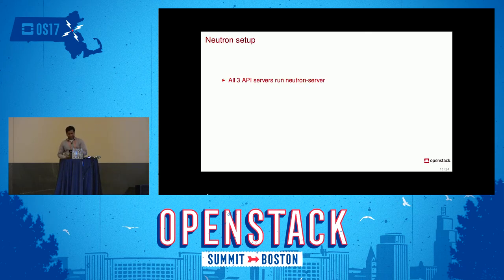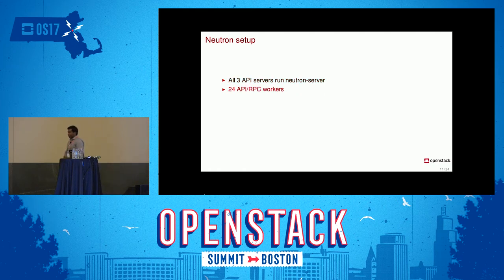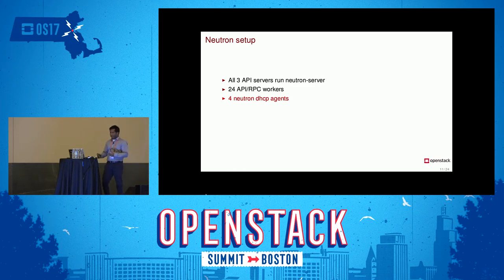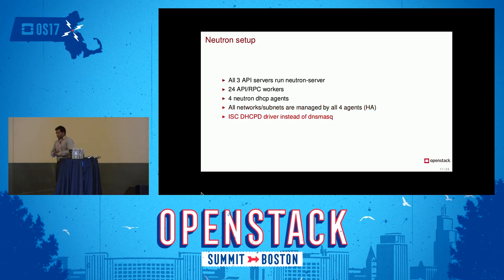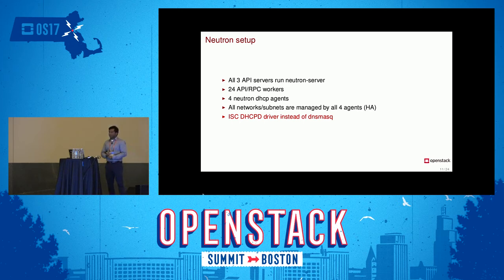Let me give a background about our Neutron setup. We had three API servers all running Neutron API, with 24 API and RPC workers. We have four Neutron DHCP agents that actually serve DHCP. All Neutron subnets and networks are managed by all agents, so any new network notification goes to all four agents for HA. By default Neutron comes with a driver for dnsmasq, but we wrote our own driver for ISC DHCPD.